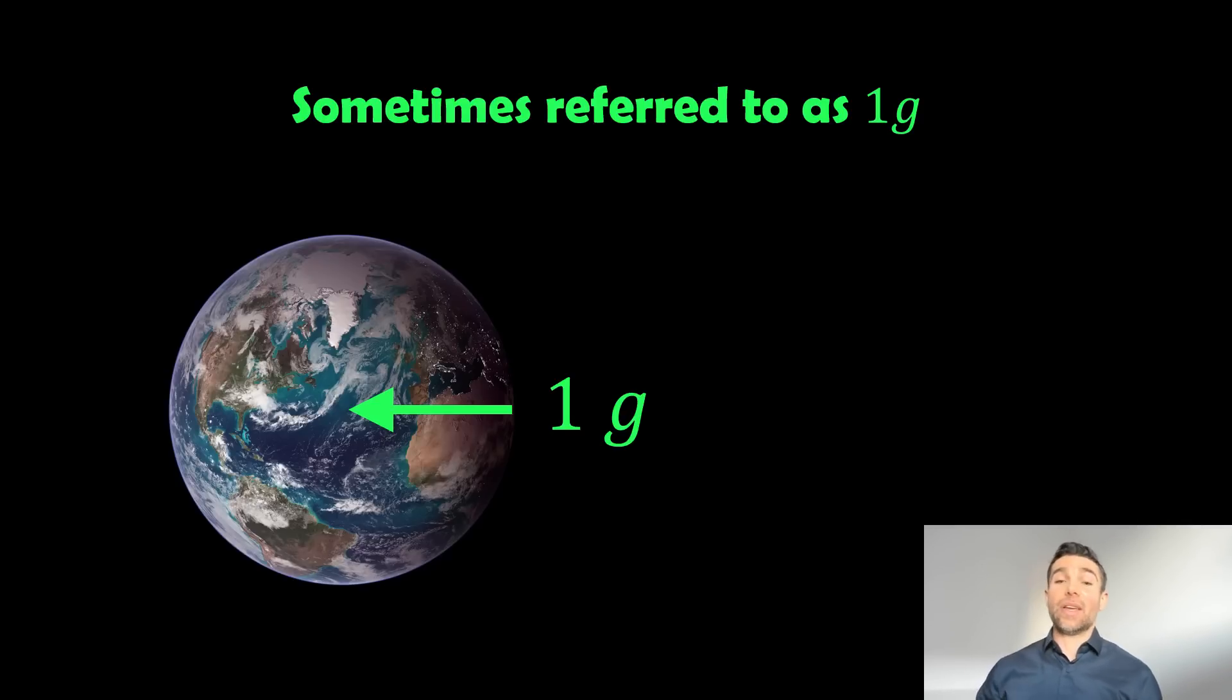You may in an airplane or something, or when you're in a car and you're turning, you get different values of g. And that's what it's referring to as well. So it's useful in that context.